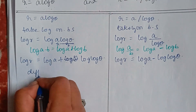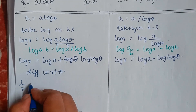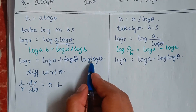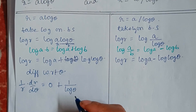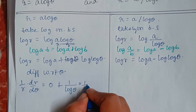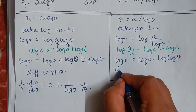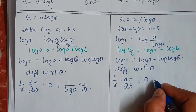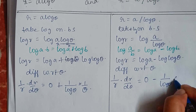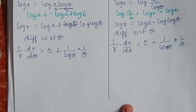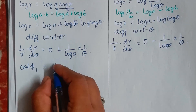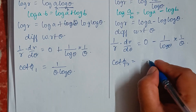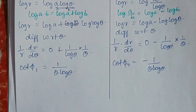Now we differentiate both expressions with respect to θ. For the first curve, differentiating gives (1/r)(dr/dθ) equals 0 plus the derivative of log(log θ), which is 1/(θ log θ). For the second curve, (1/r)(dr/dθ) equals 0 minus 1/(log θ) times (1/θ), giving −1/(θ log θ). So cot φ₁ = 1/(θ log θ) and cot φ₂ = −1/(θ log θ).